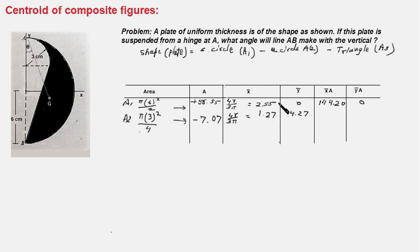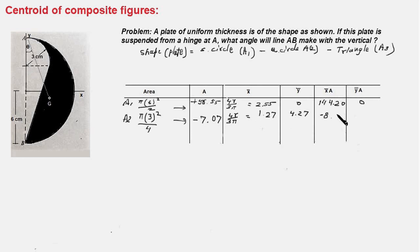Note that x̄ and ȳ for this area must be considered from the x-axis and y-axis of the full figure. For a quarter circle, x̄ and ȳ are 4r/3π measured from its own local axes, so we must add 3 cm to ȳ to get the coordinate from our reference axis — giving 4.27. Therefore x̄·A = 1.27 × 7.07 = −8.98 and ȳ·A = −30.19.